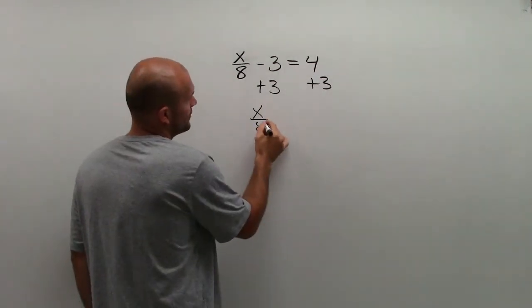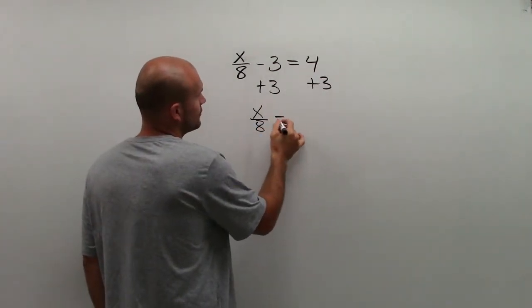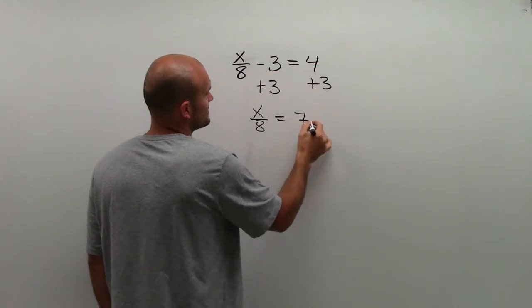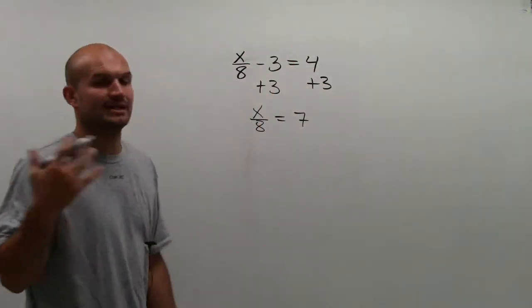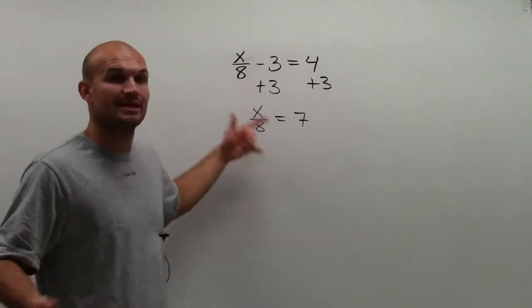So therefore, I have x over 8 equals 4 plus 3 is 7. Because negative 3 plus 3 is 0, 0 plus x over 8 is still going to be x over 8.